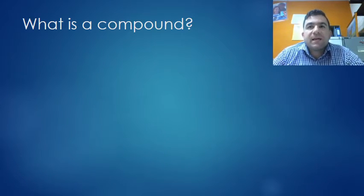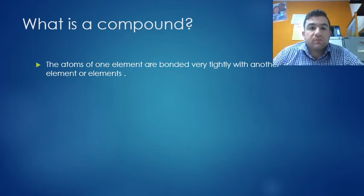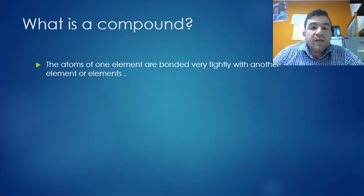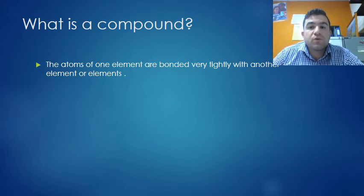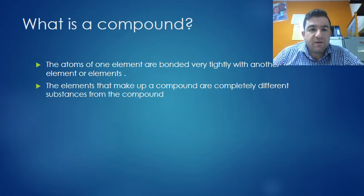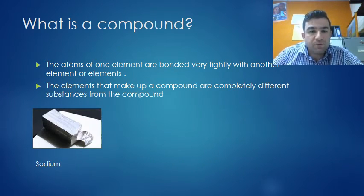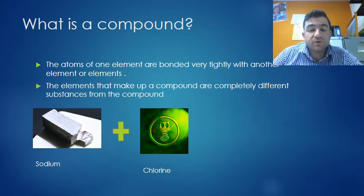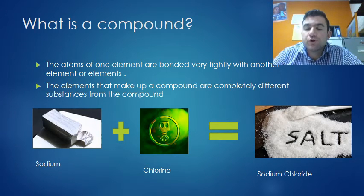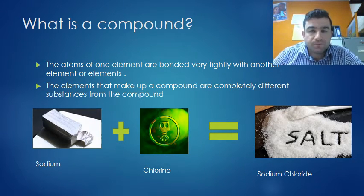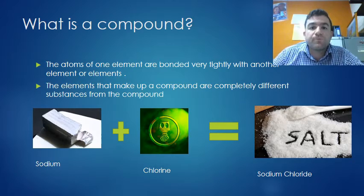What is a compound? The atoms of one element are bonded very tightly with another element or elements. It's more than one element tightly bound together. The elements that make up a compound are completely different substances from the compounds. For example, sodium, which is a metal, plus chlorine, which is a very poisonous gas, put them together and create a compound: sodium chloride, salt. What you use on your food at home and use to cook.